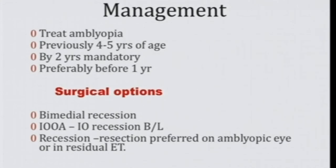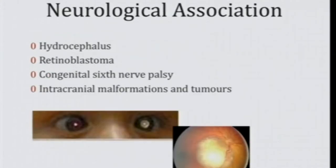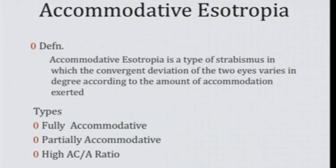Surgical options include bimedial recession. For associated inferior oblique overaction, do inferior oblique recession or myectomy. A resect procedure in one eye may be done, or a Faden in case of accommodative esotropia. Always keep in mind neurological associations — hydrocephalus can present as esotropia. Retinoblastoma can also present as esotropia, so a detailed fundus evaluation is very important.